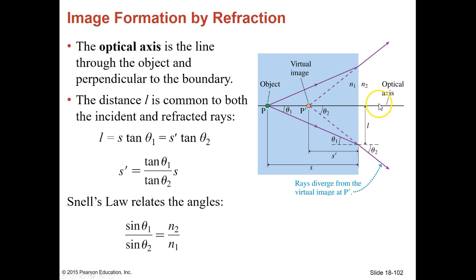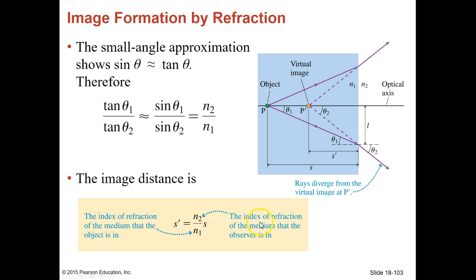Instead of seeing the object here, we think that it's a little bit closer to us, and it's just the way that light behaves as it goes from one medium to the other. The optical axis is the line that you could draw through those two points, and then through the glass right straight to whatever is picking it up. Snell's Law then just relates the angles to each other, and it's written in a divisible form instead of a multiplication form. The small angle approximation says that the sine of the angle is approximately equal to the tangent of the angle, so the image distance can simply be found using that equation.